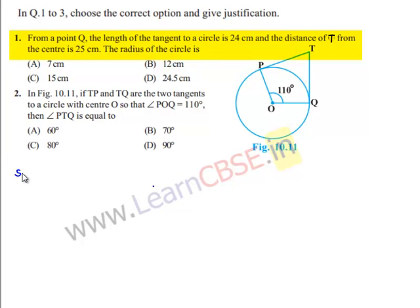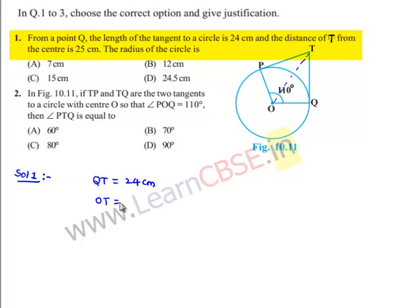Moving on to the solution for the first one: the length of tangent from point Q is given as QT = 24 cm, and the distance from the center is OT = 25 cm. We need to find the radius, which is OQ.